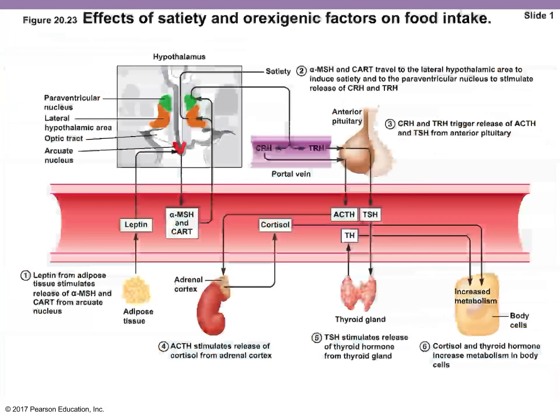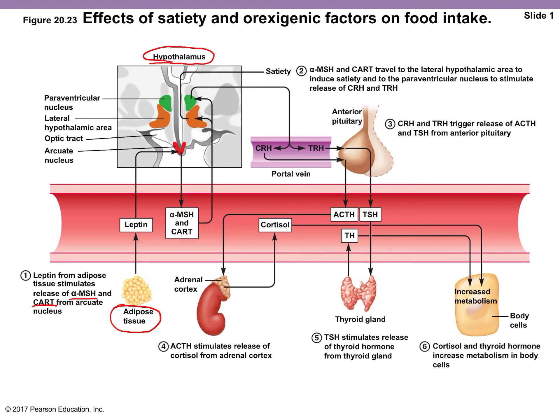Now let's look at what regulates food intake. Outside of emotional eating, there's also just the feeling of hunger and the feeling of being full. Leptin is the hormone produced by adipose tissue. Leptin goes to the brain — specifically the hypothalamus, which is your homeostatic mechanism area that controls hunger and feeling full. When leptin reaches the hypothalamus, it stimulates two other factors: alpha-MSH and CART.